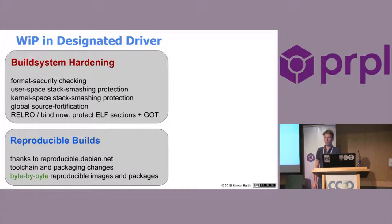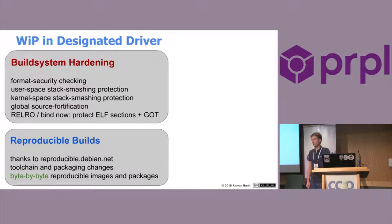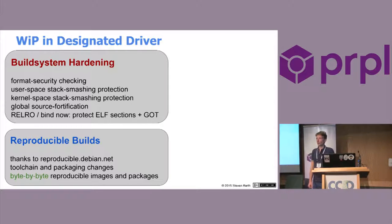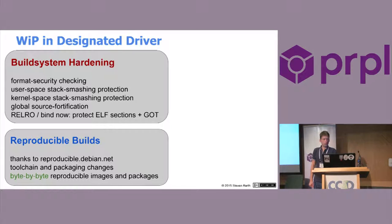We're also using source fortification, which you usually know as FORTIFY_SOURCE. There's a specific implementation we're using for this, which is also used by Alpine Linux, another distribution focused on security. On top of that, we use RELRO linker optimizations — linker flags which use immediate binding, and by that you can protect against some attacks based on overriding or overflow of the global offset table. This is now there, and we still have some work to do.